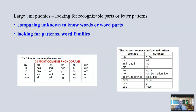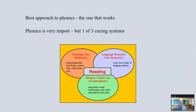Large unit phonics is looking for recognizable parts or letter patterns — comparing unknown words to words you know or word parts: word families, phonograms, patterns, prefixes, suffixes. You should use all three kinds of phonics. What's the best approach? The one that works — but you should include all three, because some students need more of one and less of another. You need to watch your students to see what they need and are responding to. Phonics is very important, but it is only one of the three cueing systems. We don't want to focus on phonics alone and let the other two systems atrophy.